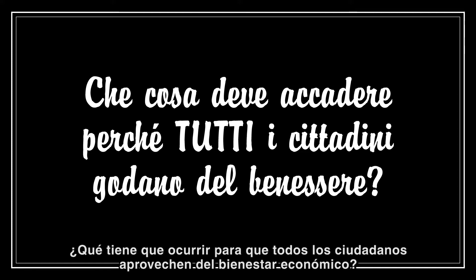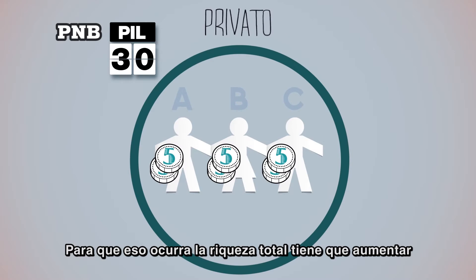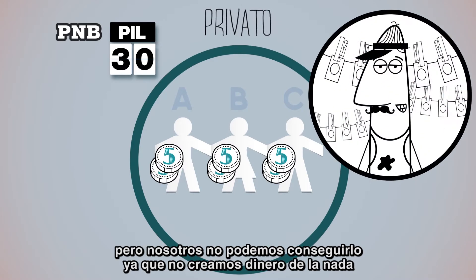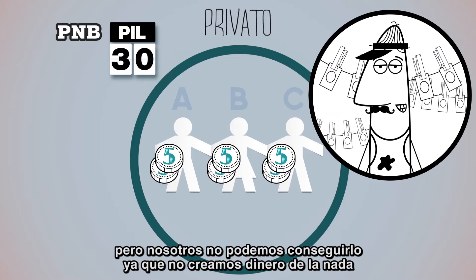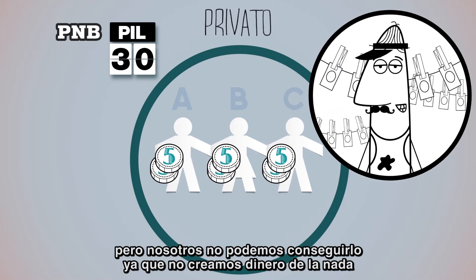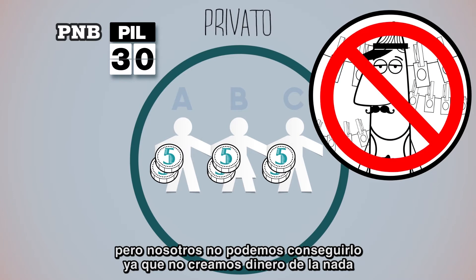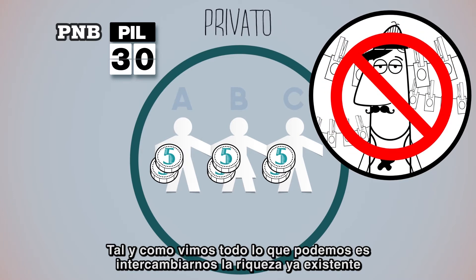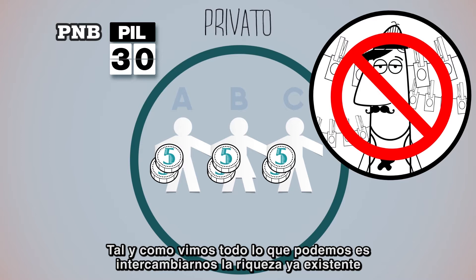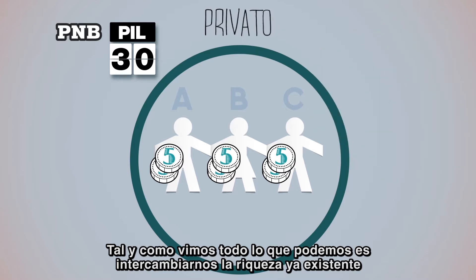Ciò significa che se il cerchio dell'economia privata rimane isolato, è impossibile che tutti i cittadini si arricchiscano perché la ricchezza totale rimane sempre di 30 euro. Che cosa deve accadere perché tutti i cittadini godano del benessere economico? Perché ciò avvenga, deve accadere che la ricchezza totale aumenti, ma noi non possiamo farlo perché non possiamo creare danaro dal nulla. Tutto ciò che possiamo fare è scambiarci la ricchezza già esistente tra di noi.